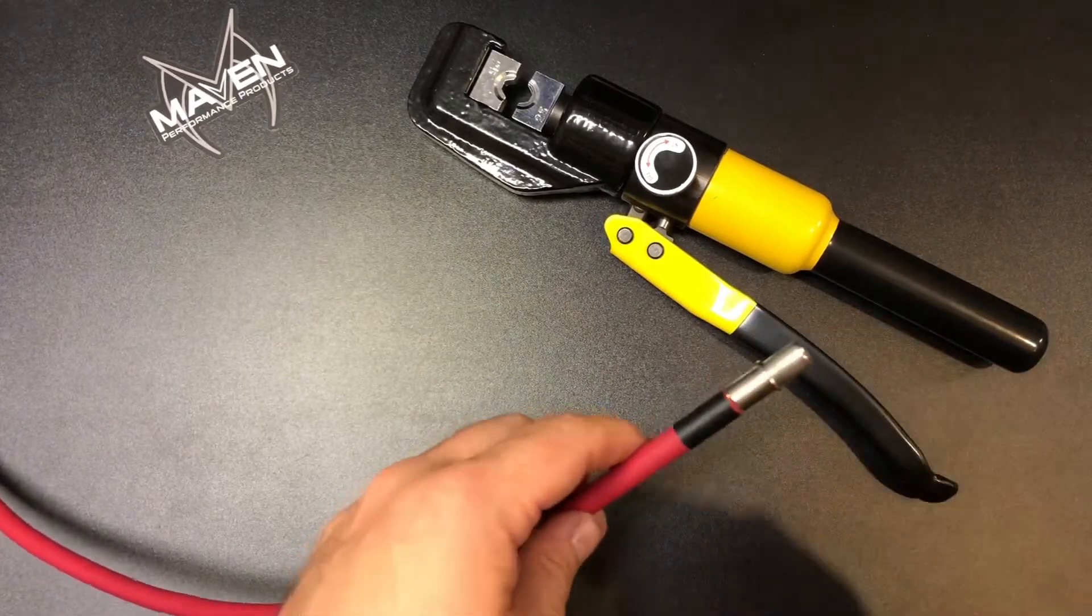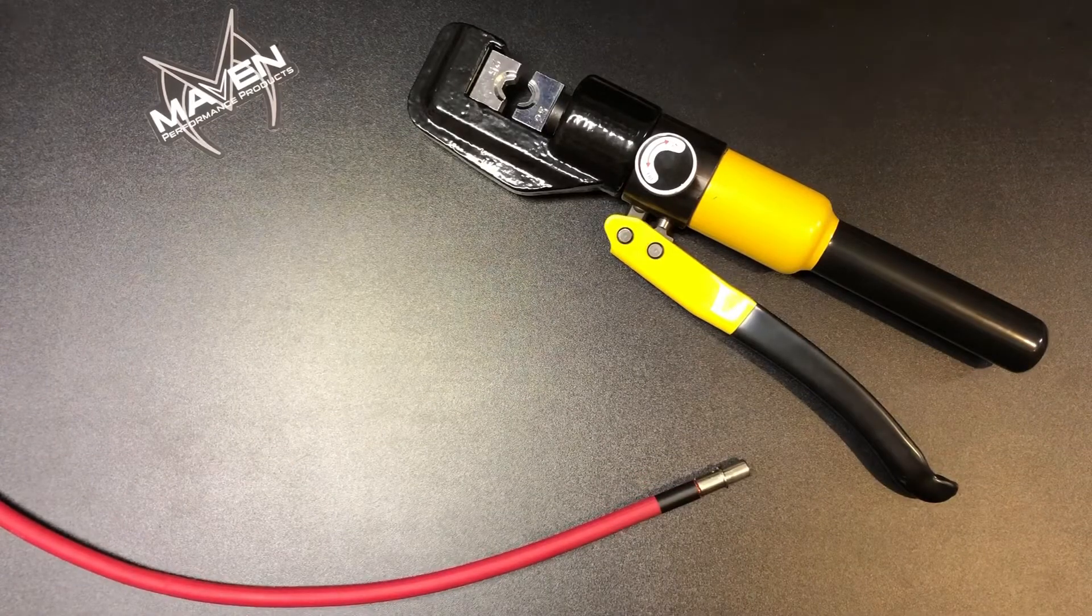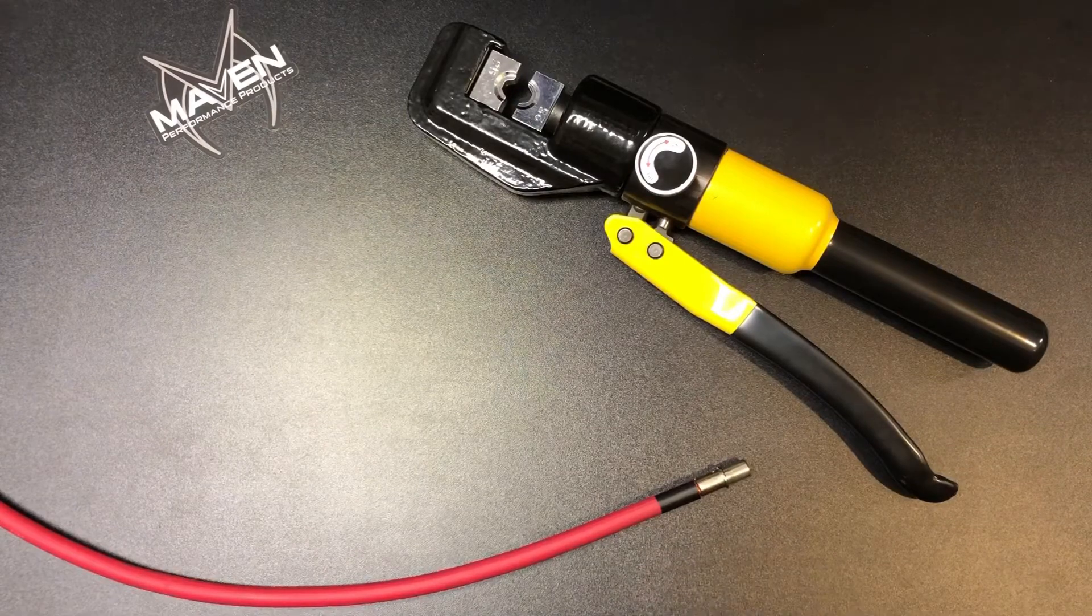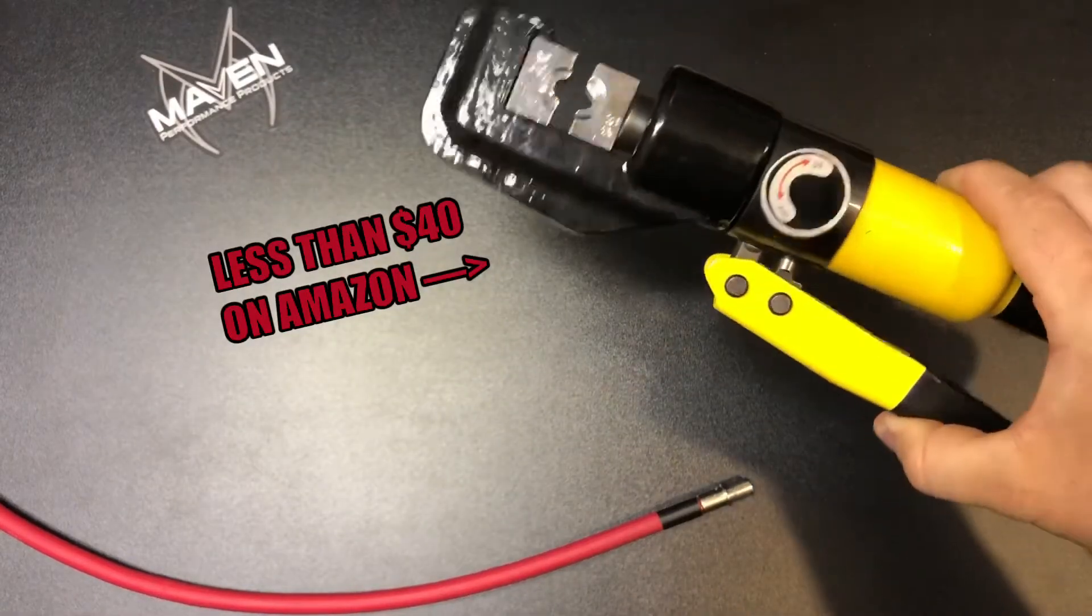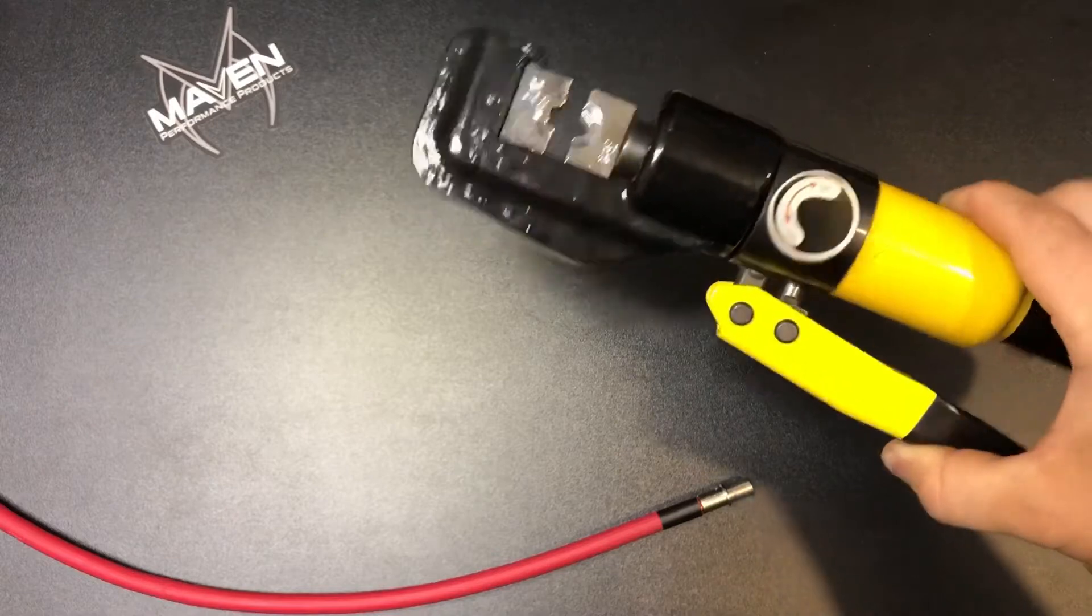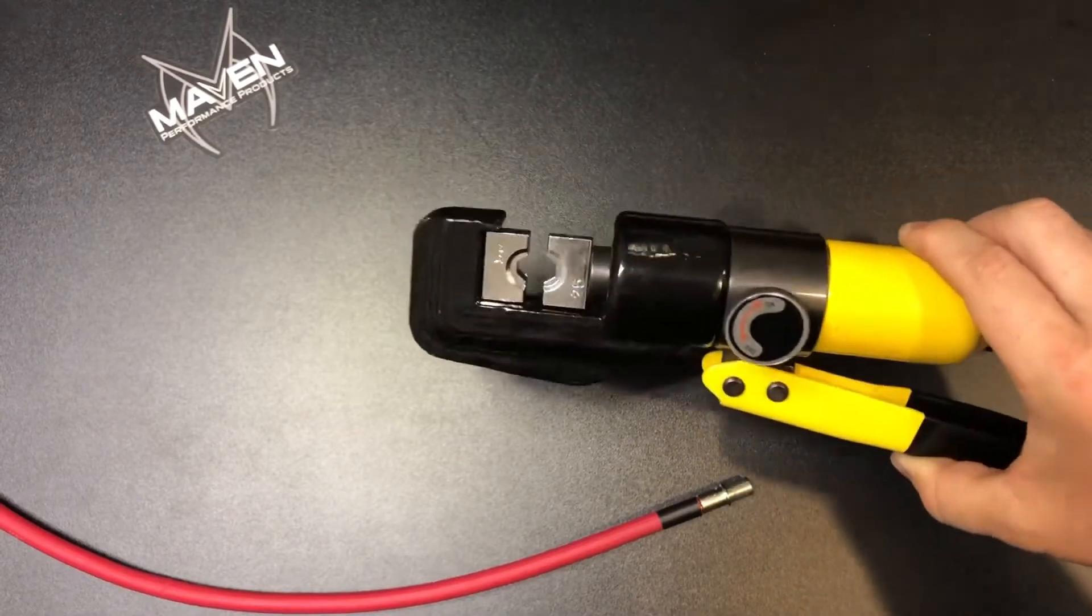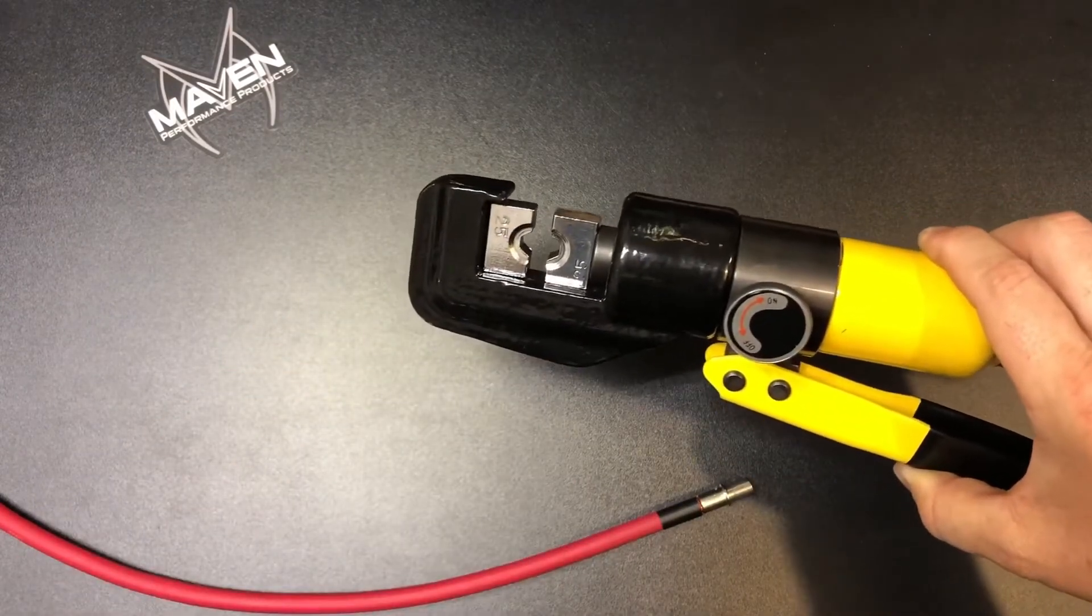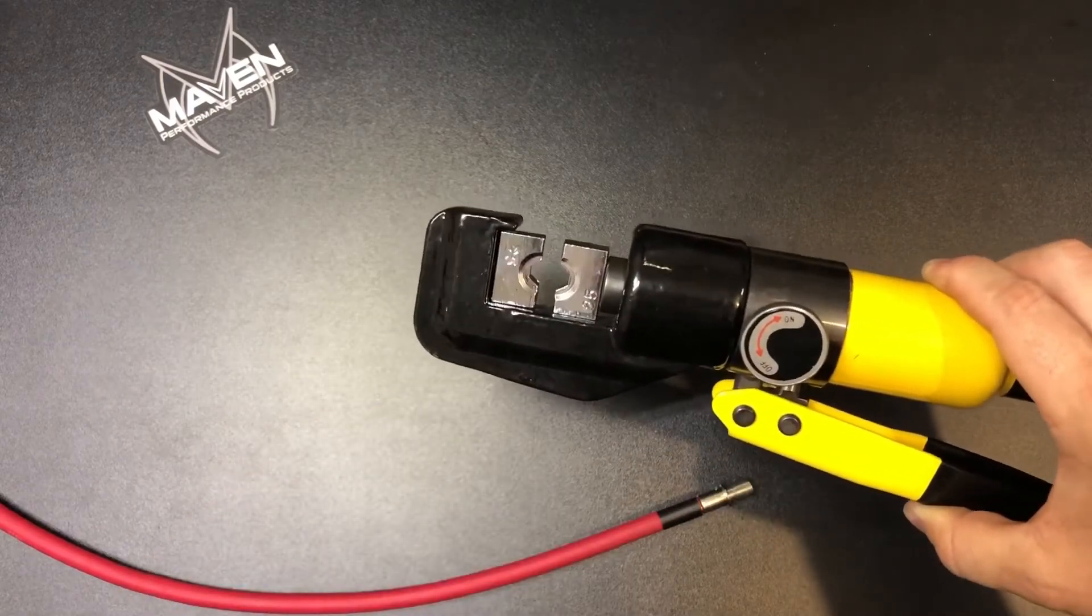Devin Vanderhoef was actually making a video where he showed crimping lugs onto battery cables, and he showed these crimpers. They're actually like 40 bucks or less than 40 bucks on Amazon. They're like a 10 ton crimping tool, hydraulic crimping tool, and they come with a whole bunch of different dies in here for different sizes of terminals. I thought, wow, that actually makes a hex shape that might work. It came with everything from like a 70 to a four set of dies.